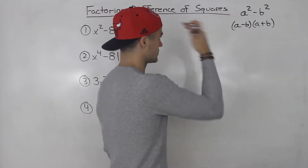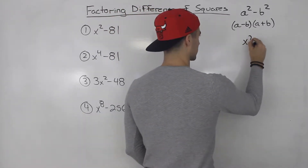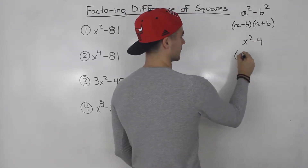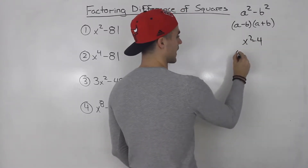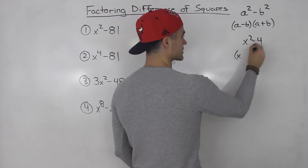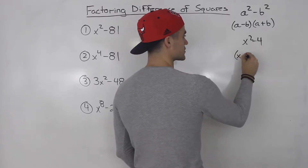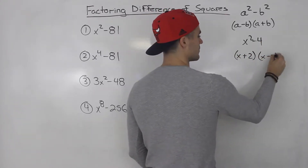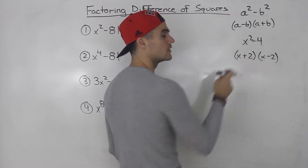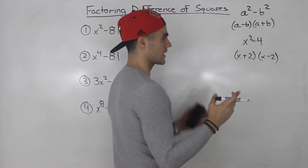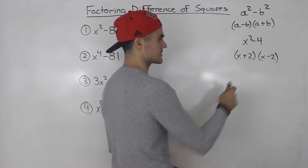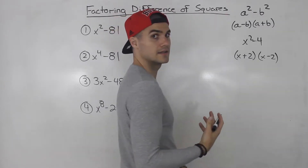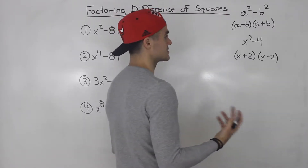Simple examples: x squared minus four. What's the square root of x squared? It's just x. Square root of four is two. So we've got x plus two, x minus two. If you were to FOIL this out, you would end up with that because those middle two terms would cancel out — that positive two x and negative two x net out to zero.